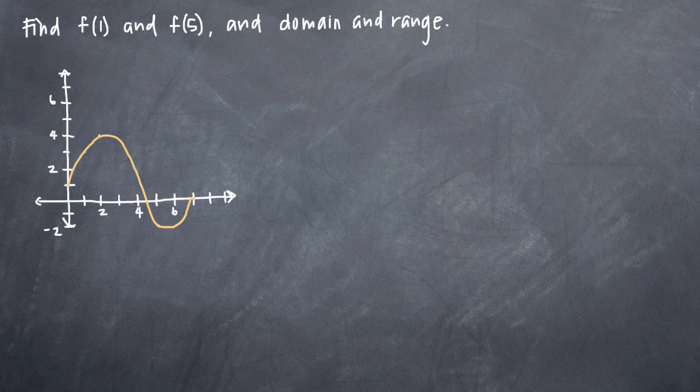In this particular problem, we've been asked to find f of 1 and f of 5 as well as the domain and range based on the graph of the function. So the first part of finding f of 1 and f of 5 is just interpreting values from the graph.